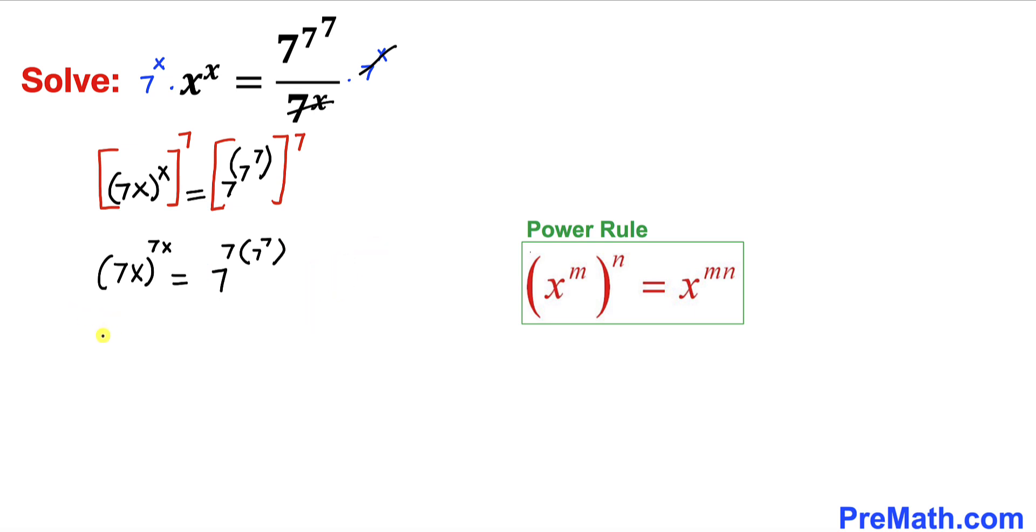So therefore we can easily write (7x)^(7x) equal to (7^7)^(7^7).